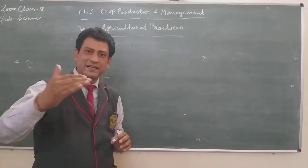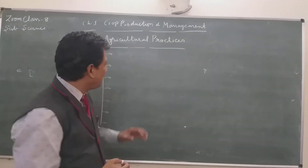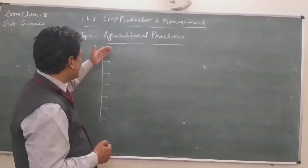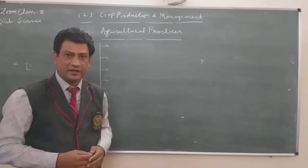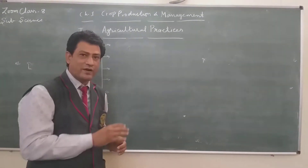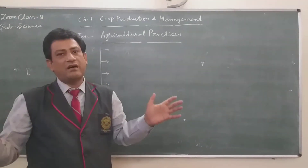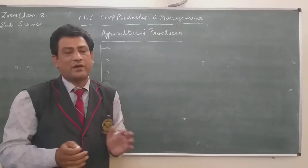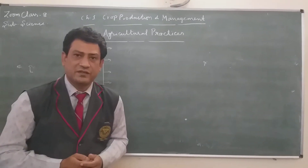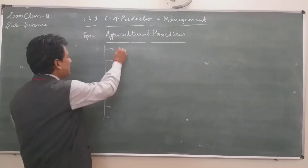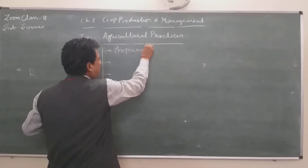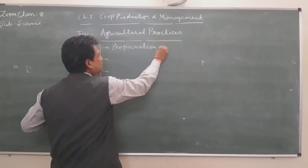Agricultural practices are arranged in a systematic, sequential manner. First of all, it is required that we prepare a field properly for the cultivation of crops. The first step we are taking here is preparation of soil.